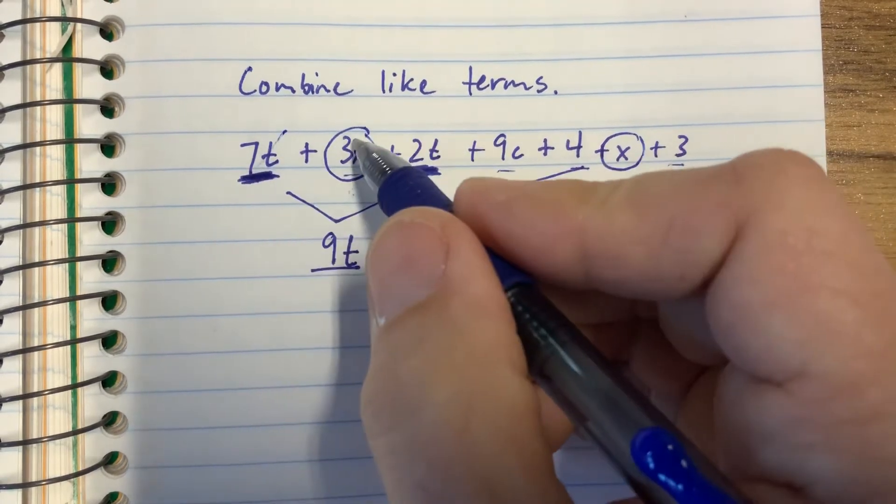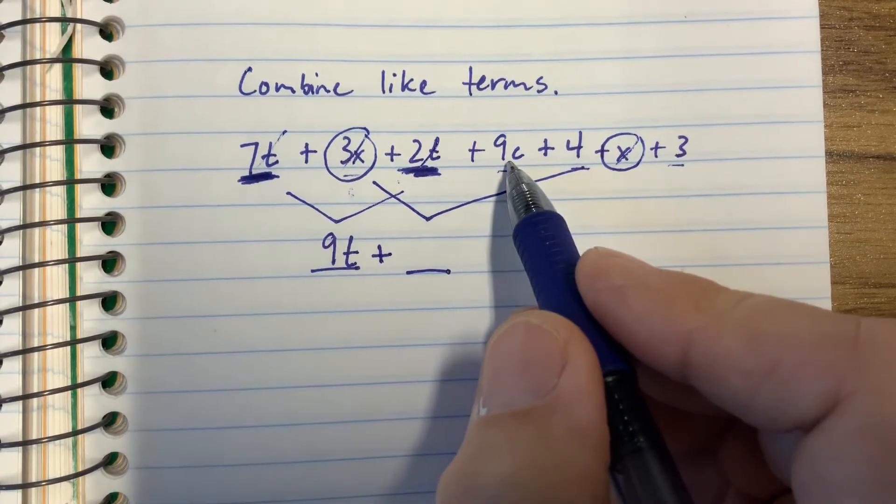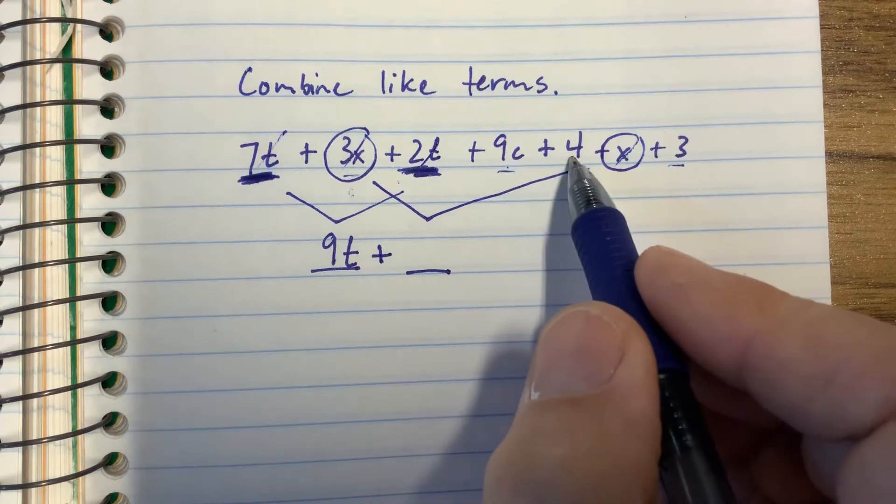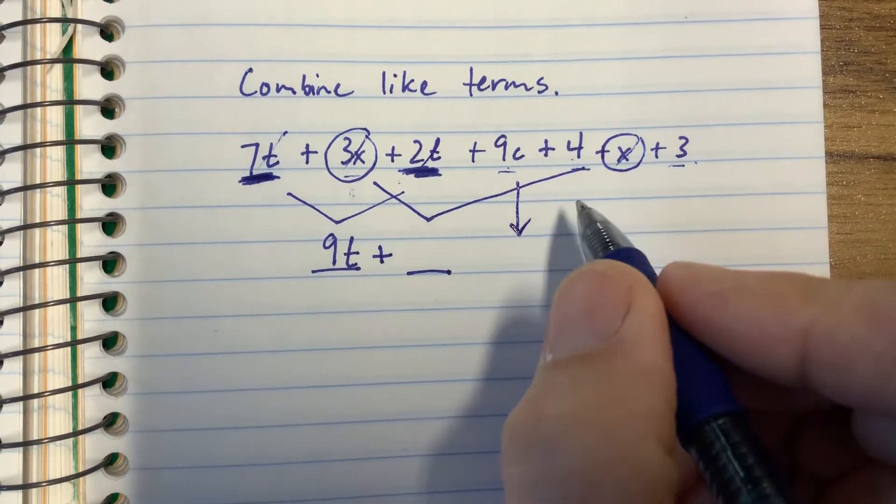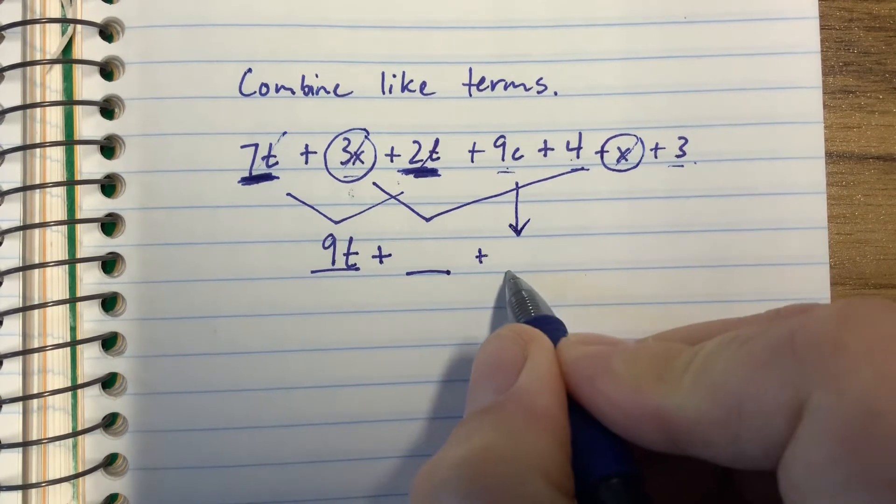So we've done the 7, the 3, the 2, the x. Now we have a 9c, a 4, and a 3. I don't have anything else with a c in it, so I'm going to bring that down and put a plus sign in between.